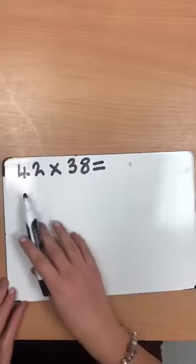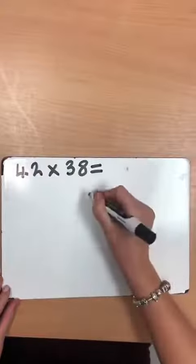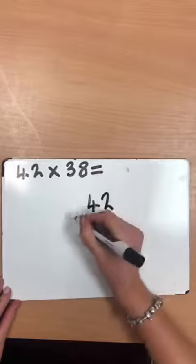So the calculation is 42 times 38. First of all, they have to set it out in a column.